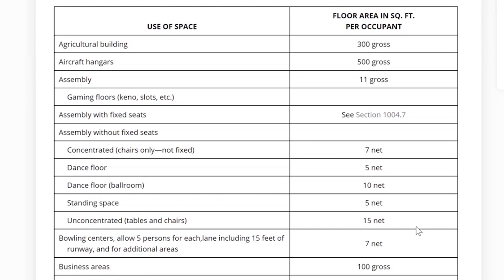Simply measure the length and width of your space, multiply those two numbers together to determine the floor area, and then divide by the factor from the building code. For example, a space that is 50 feet long by 20 feet wide would be 1,000 square feet, and when divided by the factor of 100 square feet per person, would provide a maximum occupant load of 10 persons.